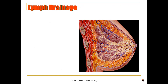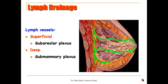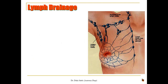For the lymphatic drainage of the breast, lymph vessels form a superficial plexus under the areola — called the subareolar plexus — and deep lymph vessels present in the retromammary space called the submammary plexus. These two plexuses communicate with each other through fine lymph vessels and eventually transmit lymph into lymph nodes.